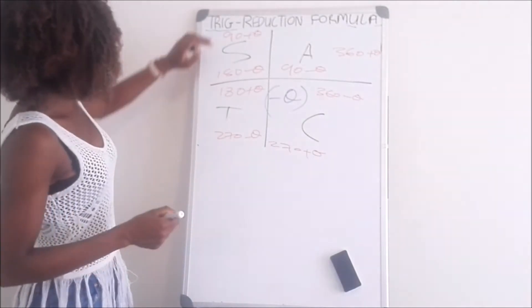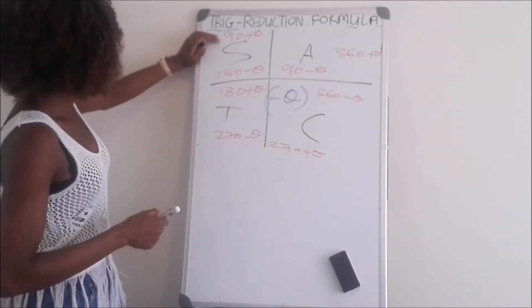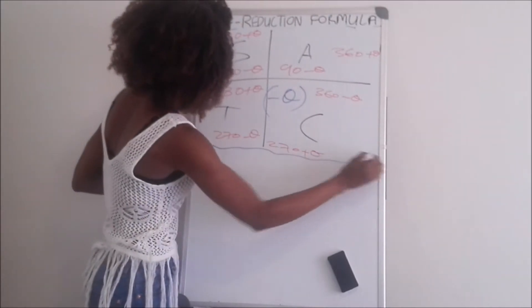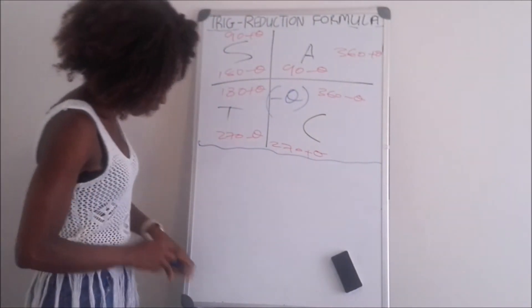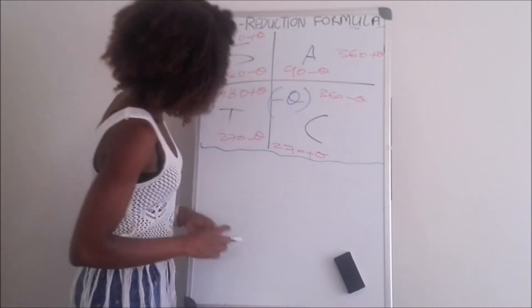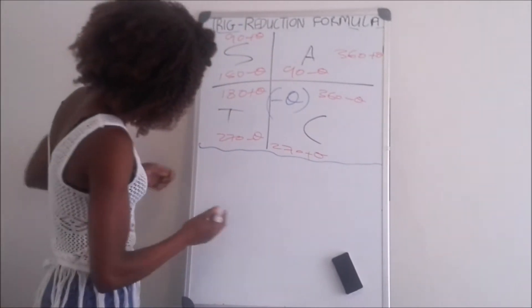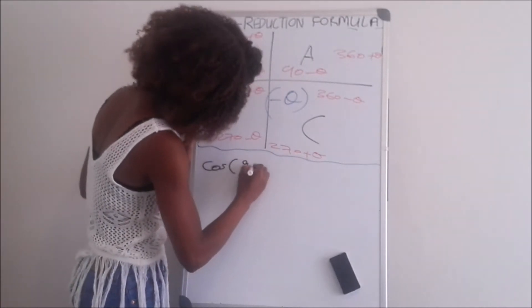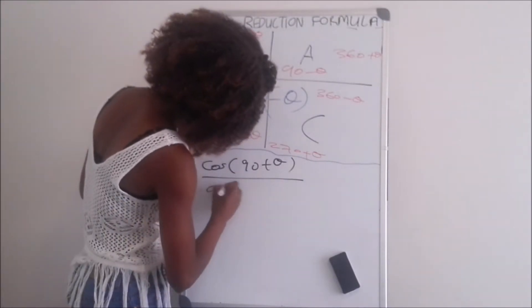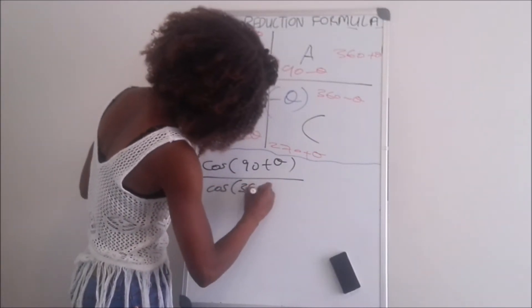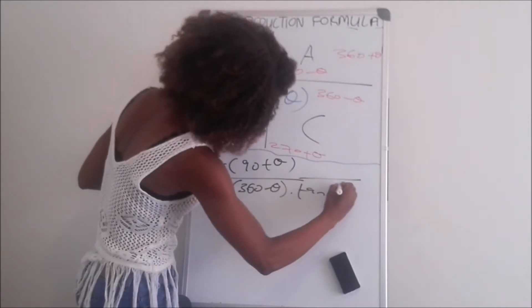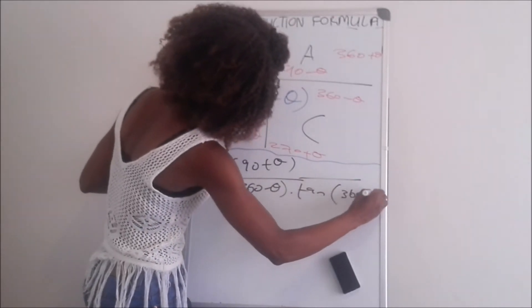Always remember that the co-function changes into the other trigonometric ratio. Let's see how we can apply all of this in an example. The example is: cos(90 plus theta) divided by cos(360 minus theta), multiplied by tan(360 minus theta).